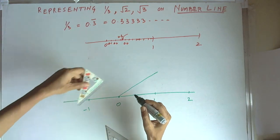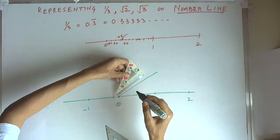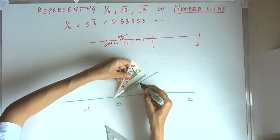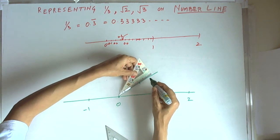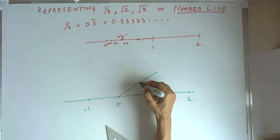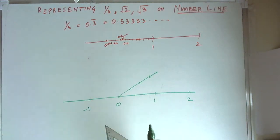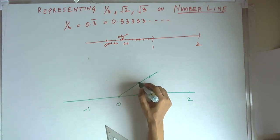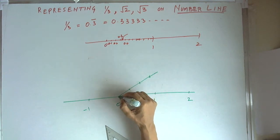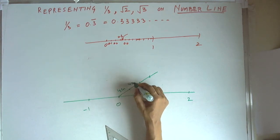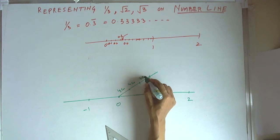For example, we can measure and mark this as 1, this as 2, and this as 3 — three equal measures. I have drawn segments of 4 centimetres, 4 centimetres, and 4 centimetres.